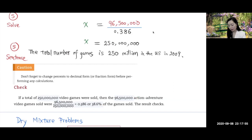They say 38.6 percent of the total video games will be action adventure. So now you take the action adventure games divided by the total games. Indeed, it is 38.6 percent. So the result checks. So you got it right. This is the end of the percentage problem.